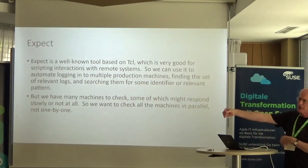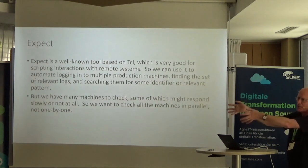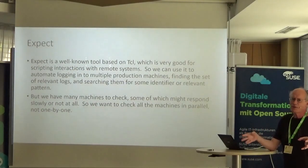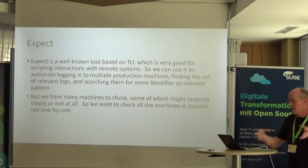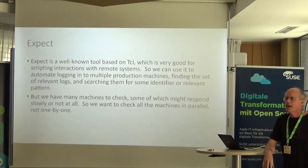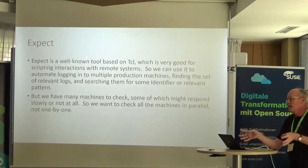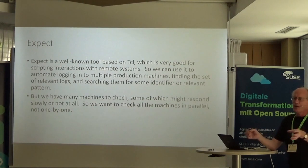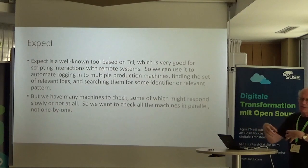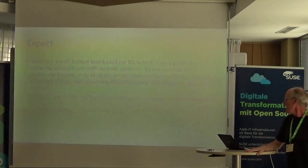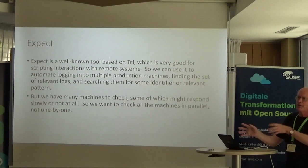I want a script that will log into a production machine and look in a particular set of files for a particular pattern. But at the same time, you have lots of machines, and sometimes some of them are down or running very slow. You want to get results back as quickly as possible, so you don't want to do them one at a time — you want to do them all in parallel. You could get parallelism by kicking off lots of separate instances of Expect, but then you have the problem of correlating the information coming back. What I actually want is to get all these results and display them in a GUI where I can drill down to what I'm interested in. So I really want to do it from one process doing all this in parallel.